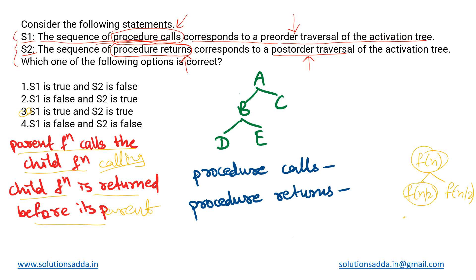While returning from the function calls, first both children — or one of the children — will return, and after that the parent will return. As you will see, both children are returned and then when they return their values to their parent, the parent returns the final value. That is how the recursive calls are made.